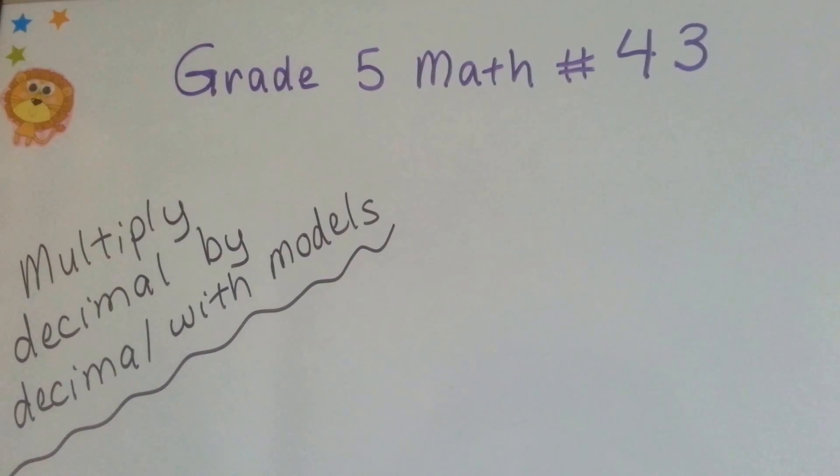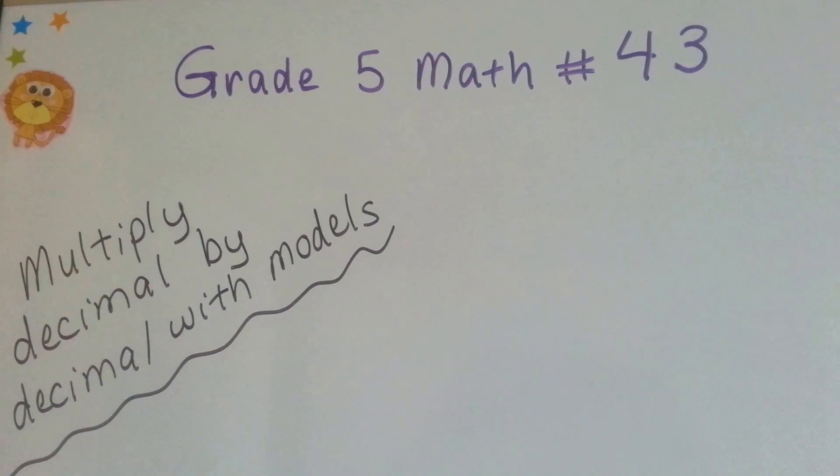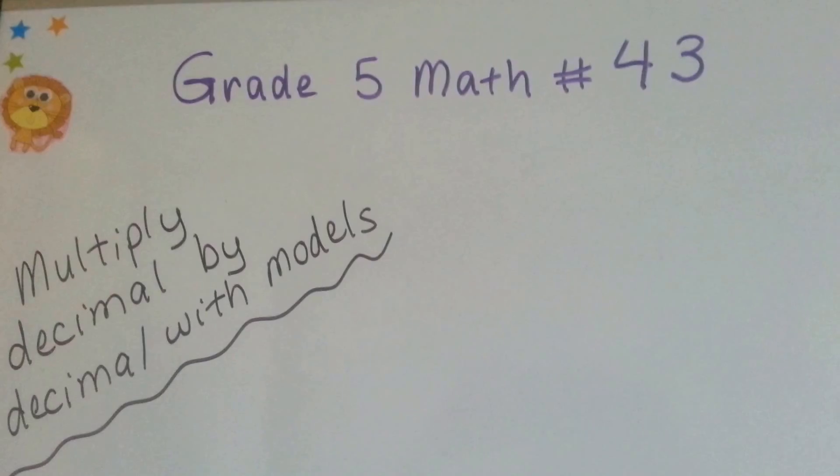Grade 5 math number 43. Multiply a decimal by a decimal with models.